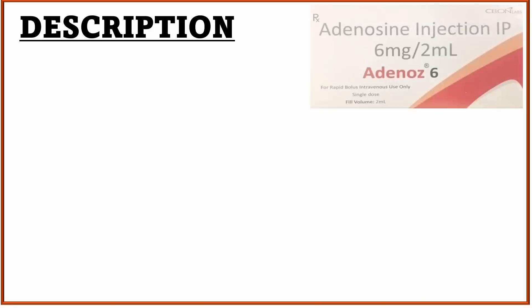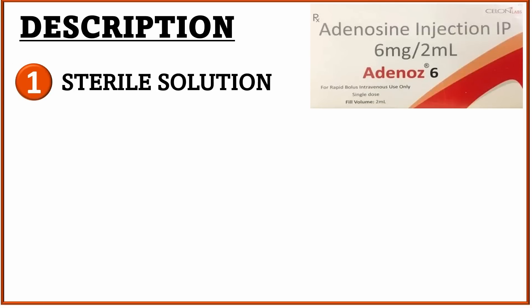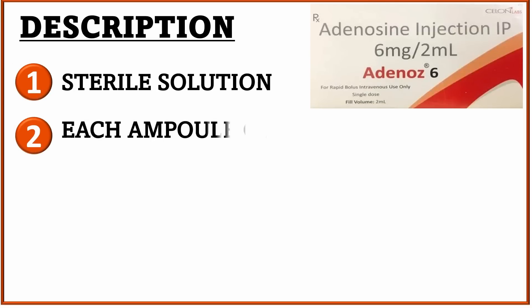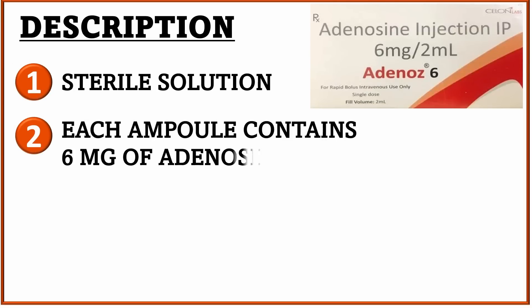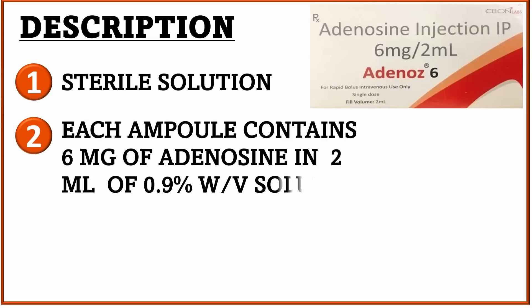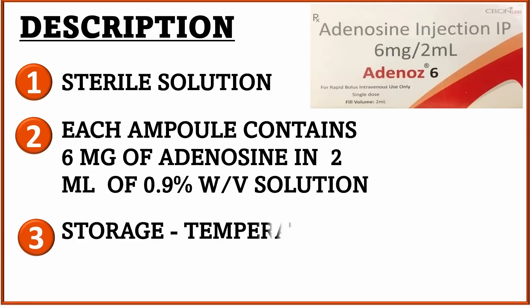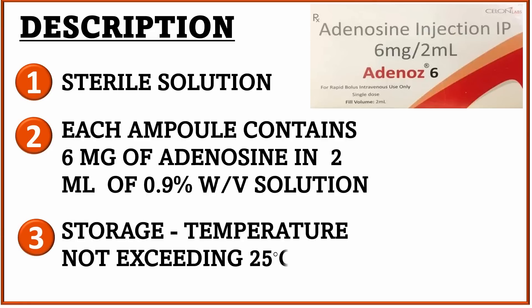Injection Adenosine is an anti-arrhythmic drug available in a sterile solution where each ampule contains 6 mg of Adenosine per 2 ml of solution. This drug is stored at a temperature not exceeding 25 degrees centigrade.